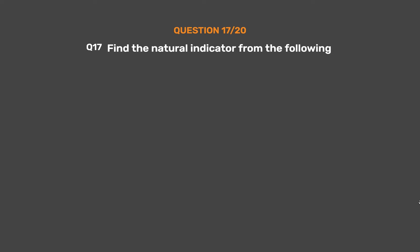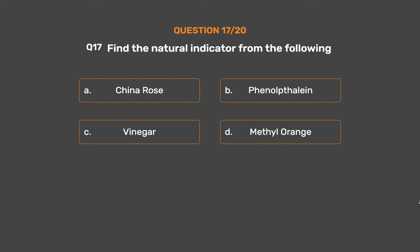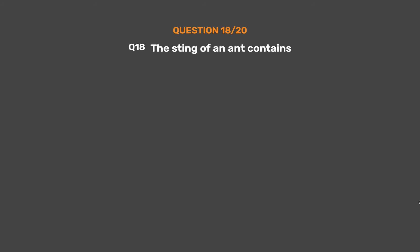Question number 17. Find the natural indicator from the following. Option A: China rose. Option B: Phenolphthalein. Option C: Vinegar. Option D: Methyl orange. The correct answer is Option A: China rose. China rose changes to magenta when brought in contact with acids and changes to green when brought in contact with bases. Hence China rose is a natural indicator.